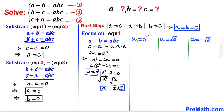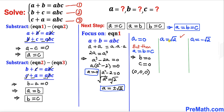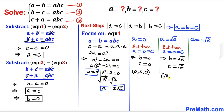For the first scenario, when a equals zero: since a equals b equals c, we get b equals zero and c equals zero. The solution set is (0, 0, 0). For the second scenario, when a equals square root of two: b equals square root of two and c equals square root of two, giving the solution set (√2, √2, √2).